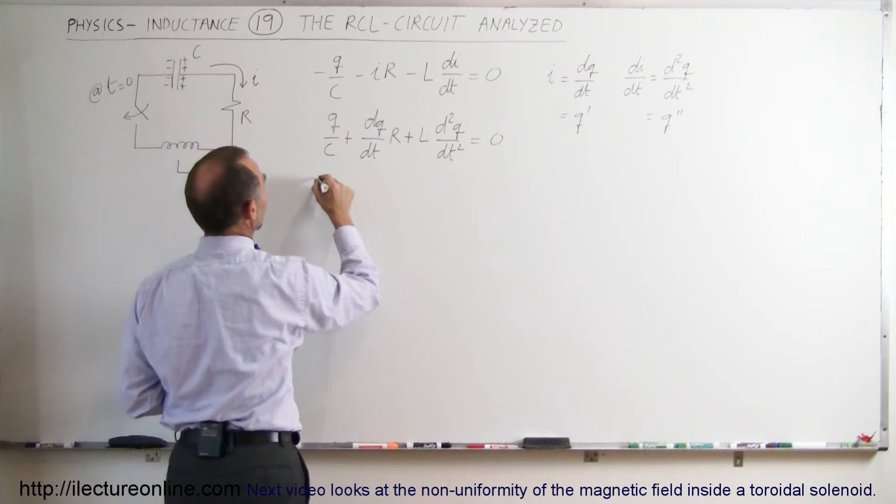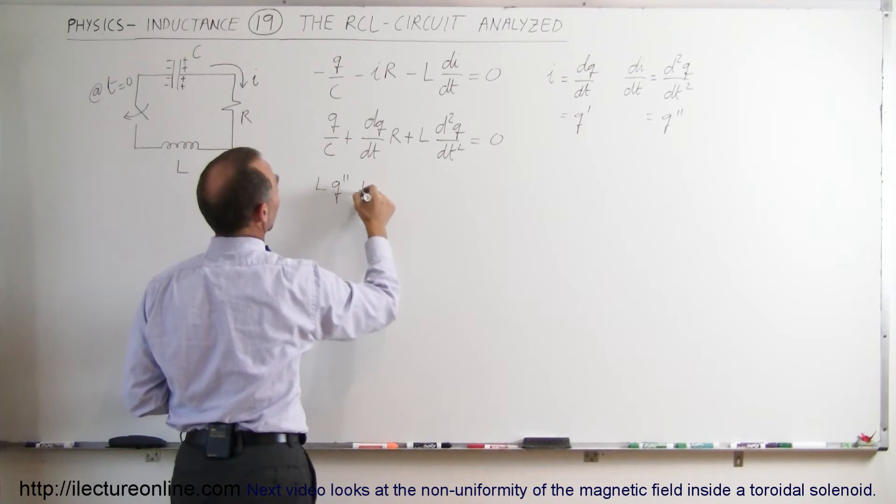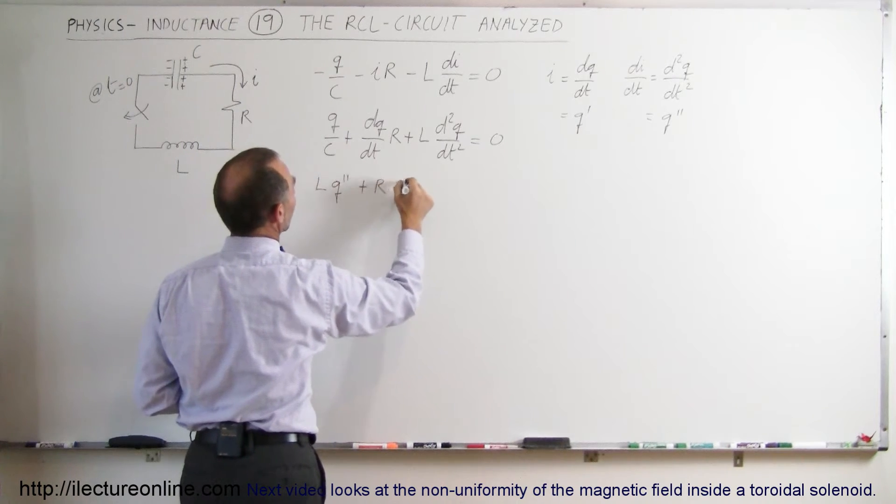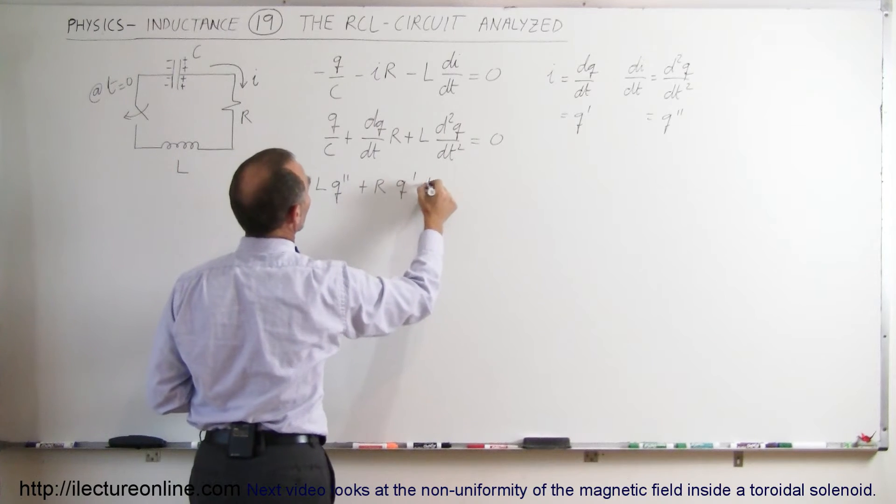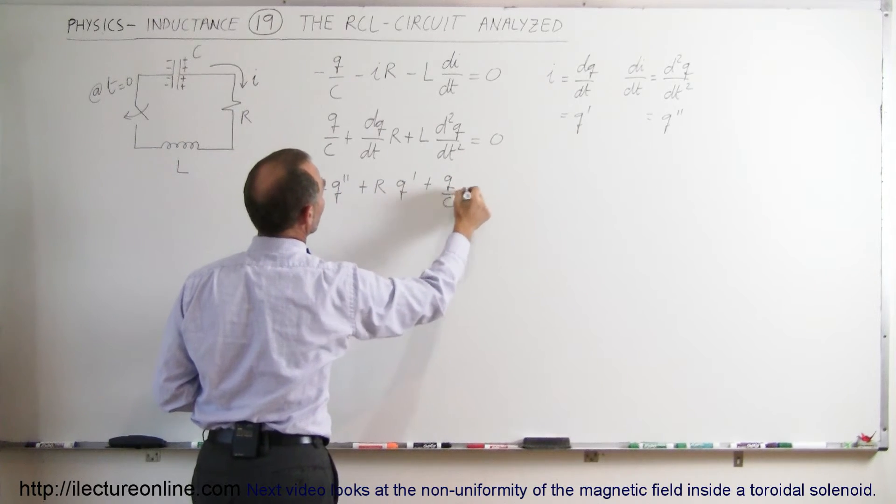So write this one first, we get l times q double prime plus r times q prime plus q over c is equal to zero.